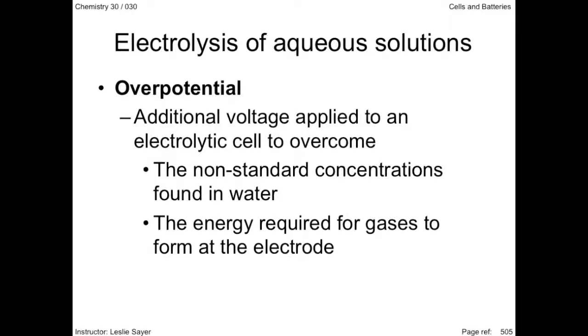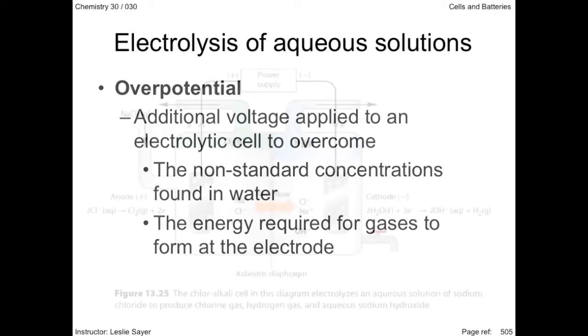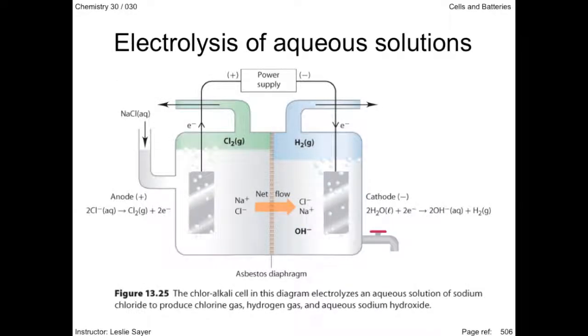It is not a lot of voltage, about 0.6 volts. It's important to know what over potential is or why it's applied, but I will not ask you to consider it in your calculations. Over potential applied to the chloralkali cell permits the chlorine ions from brine, a solution of sodium chloride, to be oxidized and have chlorine gas form at the anode, and hydrogen gas form from the reduction of water at the cathode.